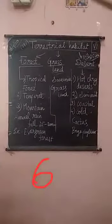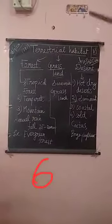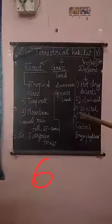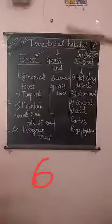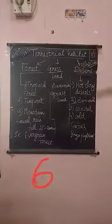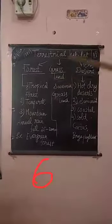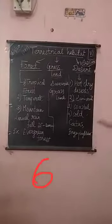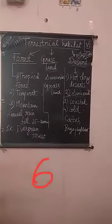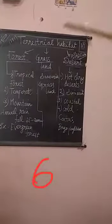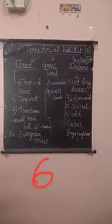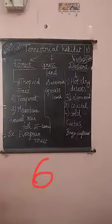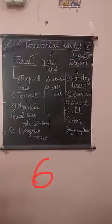Terrestrial habitat is classified into three: forest, grass, and desert. Forest is again classified into tropical, temperate, and mountain. Forest means a large amount of trees; grass means covered by grass; desert means lack of water. These are the things about terrestrial habitat. In the next video, we will see about plant adaptations and modifications. Thank you.